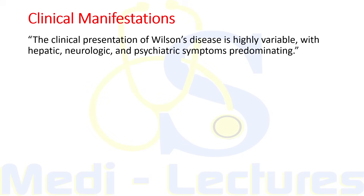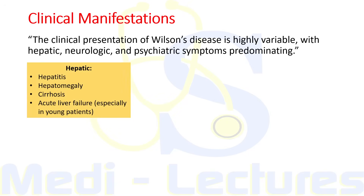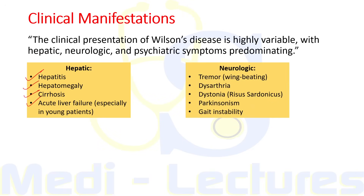The clinical presentation of Wilson's disease is highly variable, with hepatic, neurologic, and psychiatric symptoms predominating. Hepatic features include hepatitis, hepatomegaly, acute liver failure especially in young patients, and cirrhosis. Neurological features occur due to predilection of copper deposition into the basal ganglia, including tremor - typically a wing-beating tremor - dysarthria, dystonia (typically risus sardonicus, also seen in strychnine poisoning and tetanus), parkinsonism, and gait instability.